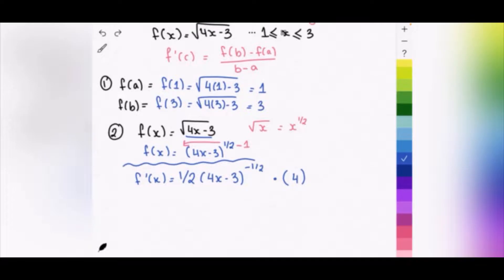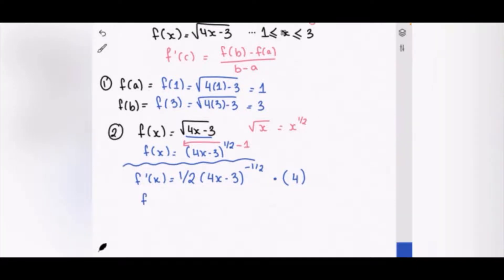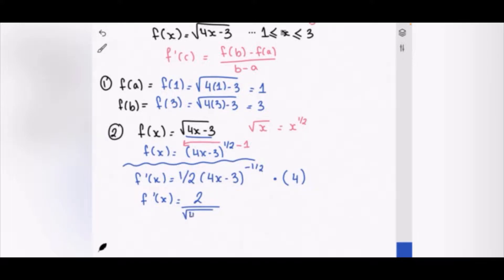Now we rewrite the result back in square root form. So f'(x) = 2 / √(4x - 3), since 1/2 × 4 = 2 and the negative power moves the expression to the denominator as a square root.